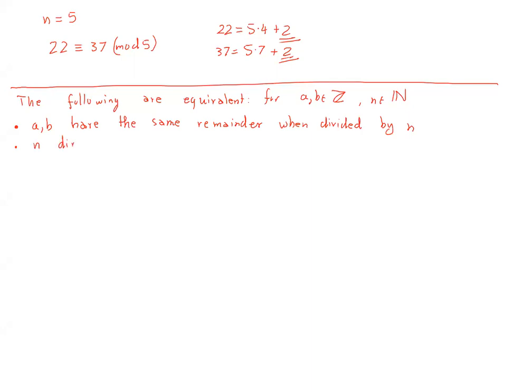n divides a minus b. So here we should specify that what we mean by n divides a minus b means that a minus b is n times some integer number k. And that's what divisibility means. And a third condition is that one can go from a to b, and conversely of course, by steps of length n.